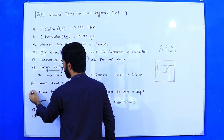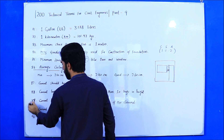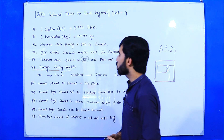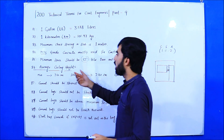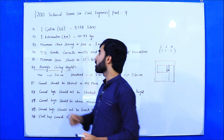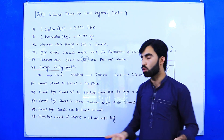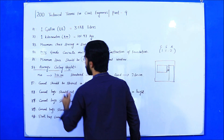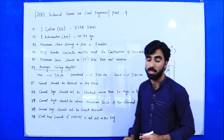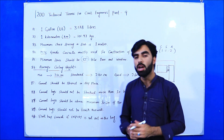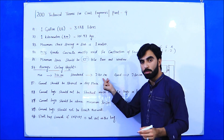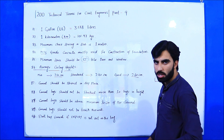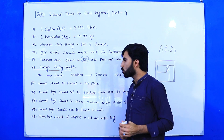Term number 86: Average ceiling height. The minimum ceiling height for a bedroom should not be less than 210 centimeters. The standard ceiling height is 240 centimeters, and a good ceiling height is 260 centimeters. Remember these values.